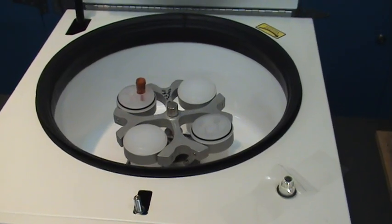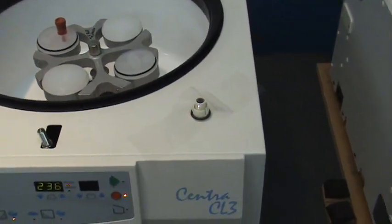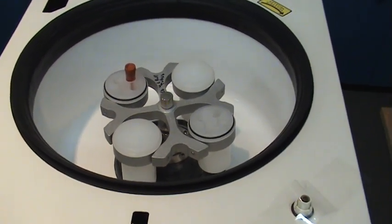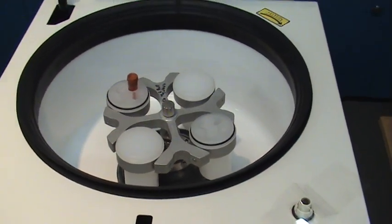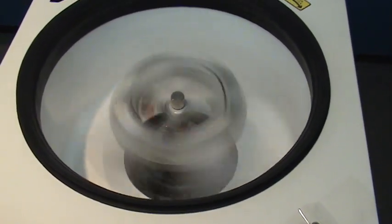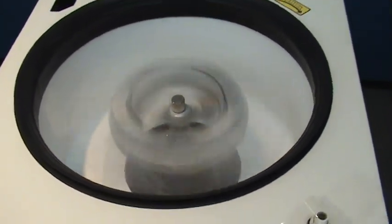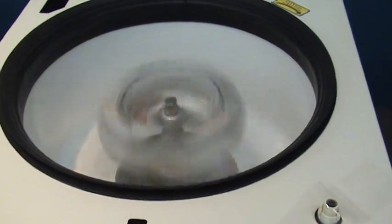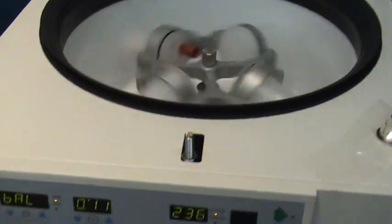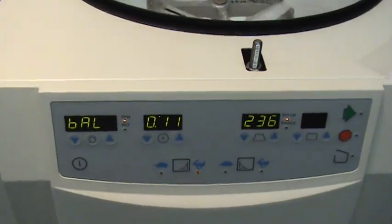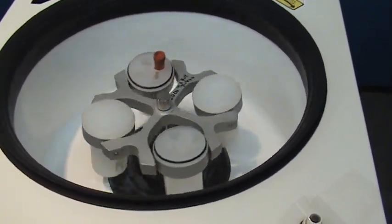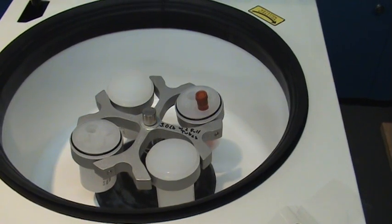We will temporarily override or bypass the centrifuge normal lid interlock system just so you can see the violence which occurs with a rotor that is this badly out of balance. And the machine's interlock system and software shuts off the motor rotation.